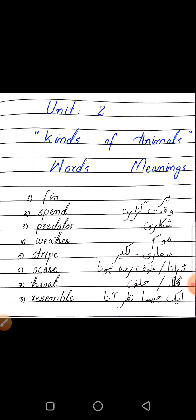Number five: 'stripe' — S-T-R-I-P-E. Stripe means 'dhari' or 'lakeer.' As angel fish have stripes — yellow and blue stripes on their body.